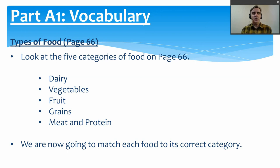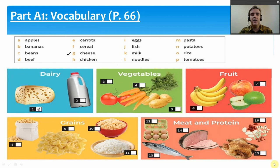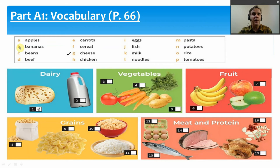We are going to match the foods to their categories. Starting with A — we have apples, which match up with number 7. Here we have a nice green and red apple, and apples are fruit. B — we have bananas, which match up with number 6. Bananas are also a fruit.